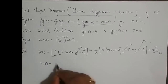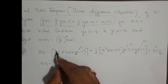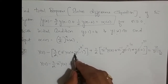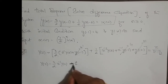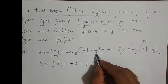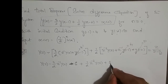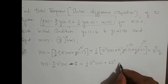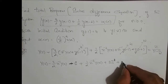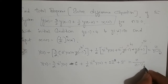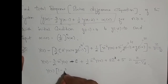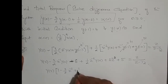What we get is Y(z) minus 3/2·z⁻¹·Y(z) — and substituting y(-1)=4, so 3/2 times 4 gives 6, with a minus sign giving minus 6 — plus 1/2·z⁻²·Y(z). Then 4/2 is 2, giving plus 2z⁻¹, and 10/2 is 5, giving plus 5, equals z/(z - 1/2).